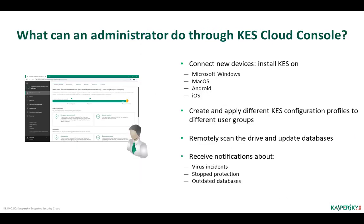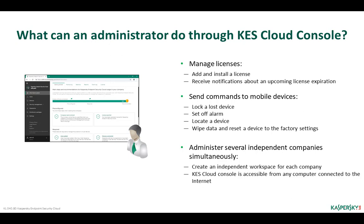What can an administrator do through the KESS Cloud console — less than through the KSC console, but more than via the KSOS Management Portal? Admins can connect new devices and send a link to the installation package; create and apply different configuration profiles to different groups of users; remotely scan drives or update threat signature databases; receive notifications in the console or by email about events on devices; manage licenses; and send commands to mobile devices — such as blocking a lost phone, receiving its GPS coordinates, finding it on a map, or wiping all data. Some functions are available for Android only.